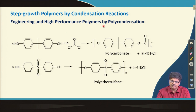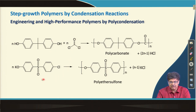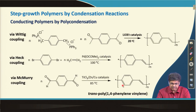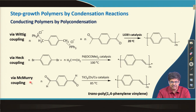Step growth polymerization can also be used for making high-performance engineering polymers, such as polycarbonate synthesized from bisphenol A with phosgene, or polyether sulfone. Some organic coupling reactions can also be used to synthesize polymers like trans-poly(1,4-phenylene vinylene), with examples including Wittig coupling, Heck coupling, and McMurray coupling — standard organic reactions utilized in this polymerization process.